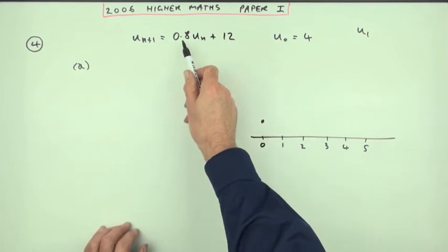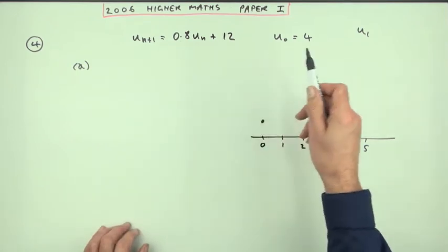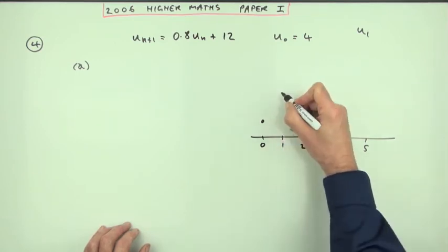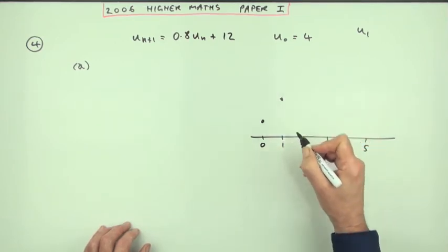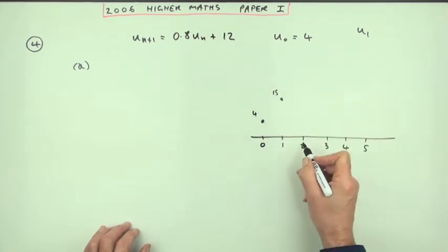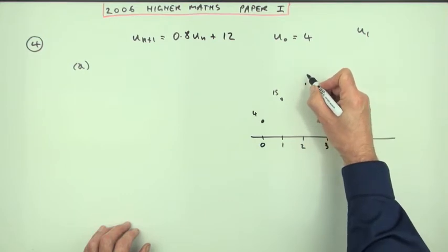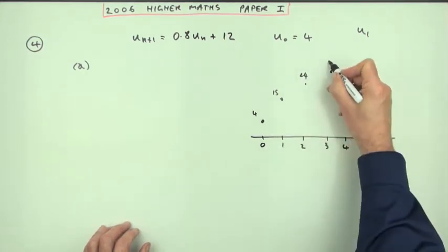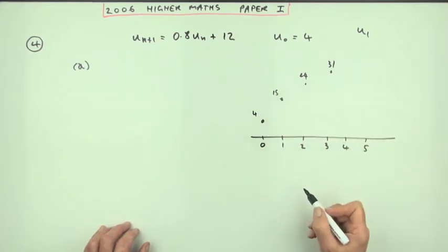Now if you were to follow this, multiplying it by point eight and adding 12, then U1 would be about 15 or so, it's actually more than 15 but approximately 15, U2 would be 24, U3 would be 31, and these numbers are getting closer together.